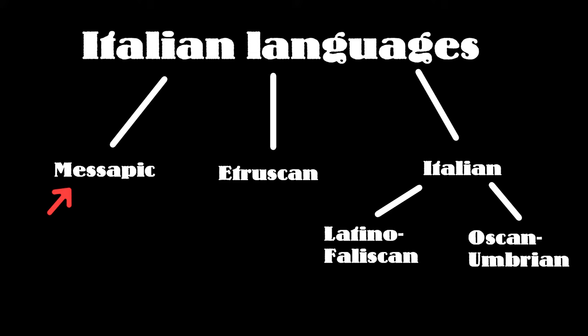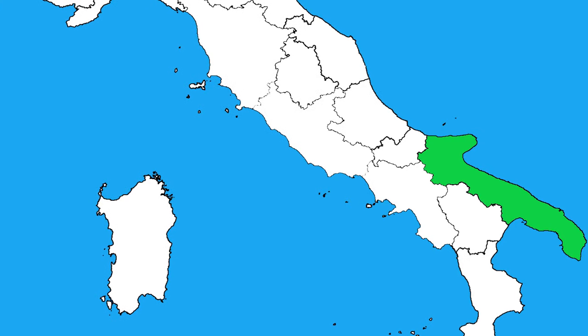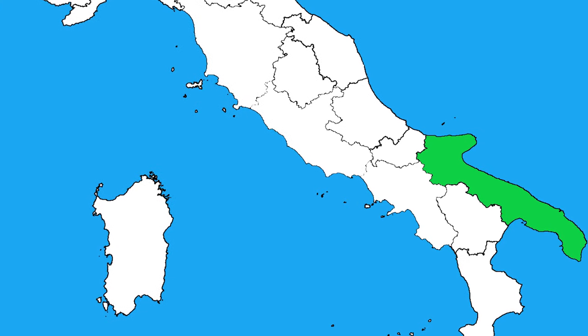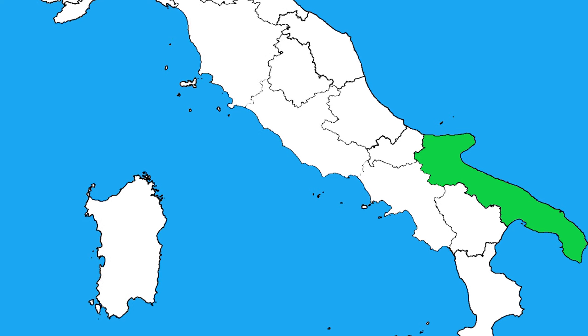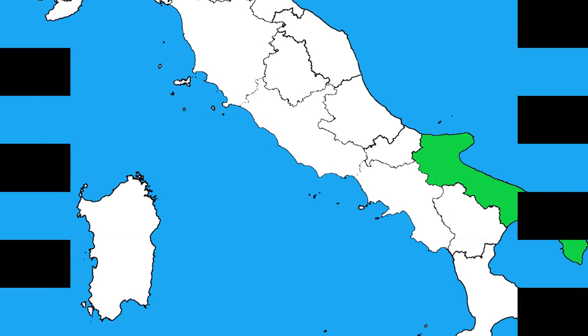The Iapigians spoke Mesapic, the Etruscans Etruscan, the Latins a Latino-Faliscan language, and the other Italian tribes an Osco-Umbrian dialect. Little is known about the Iapigians. They settled in southeastern Italy, on the Mesapian or Calabrian peninsula, and in Apulia.